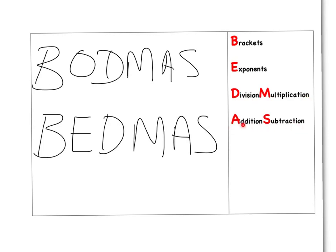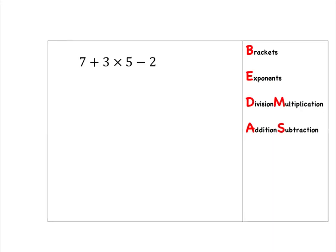The best way to understand this is with some examples. In this example, we only have addition, multiplication and subtraction. We know that we need to do the division and multiplication before we do addition and subtraction. So in this case, what we need to do is we need to do that multiplication first, before we go on to dealing with the addition and subtraction.